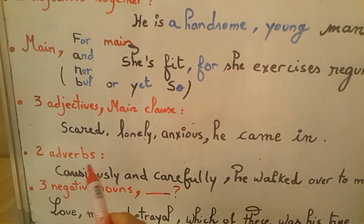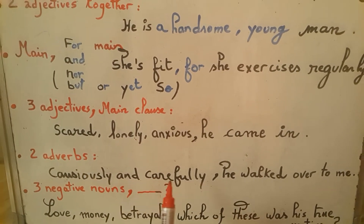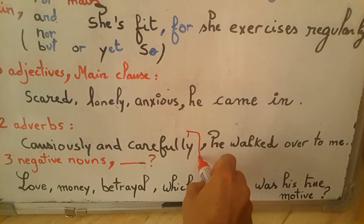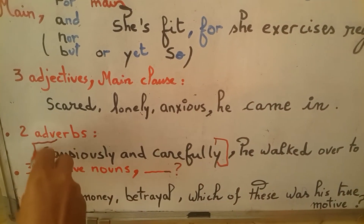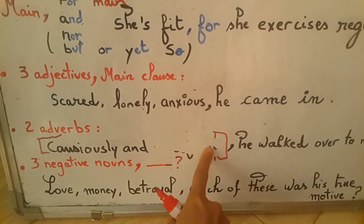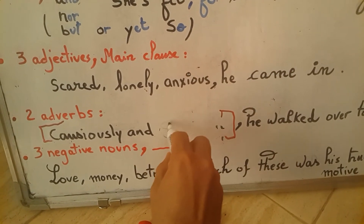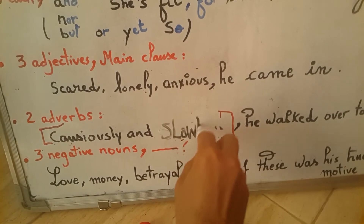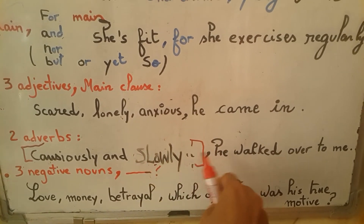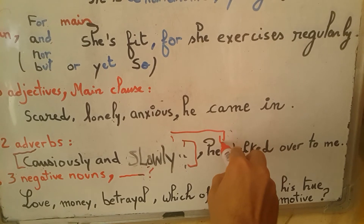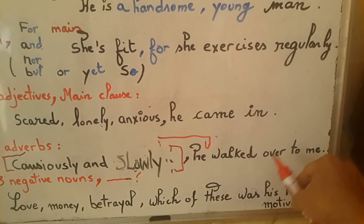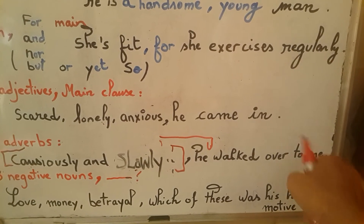We could also use a pair of adverbs, as in this example: 'cautiously and carefully, he walked over to me.' Since cautiously and carefully have very similar meanings, we could swap one out — for example: 'slowly and cautiously, he walked over to me.' Or we could put the adverbs at the end: 'he walked over to me cautiously and slowly,' without a comma.